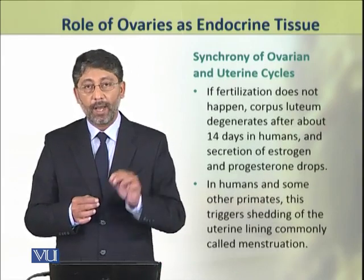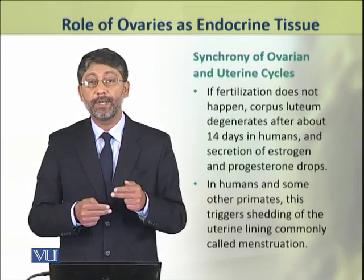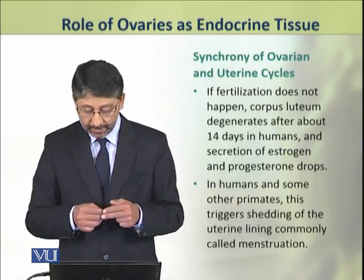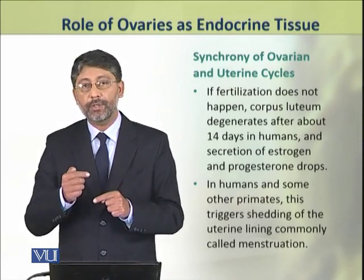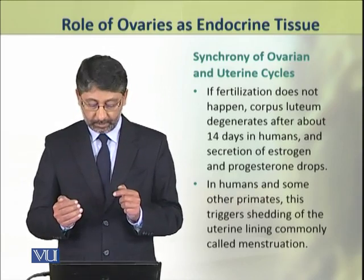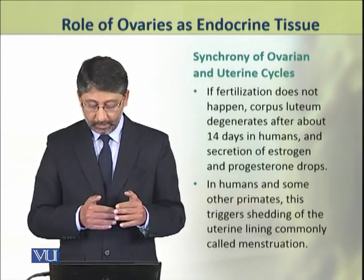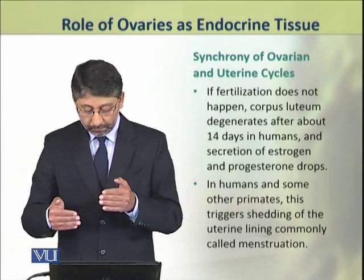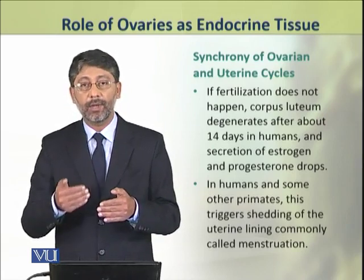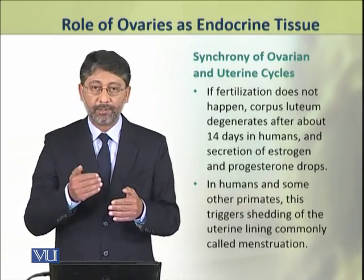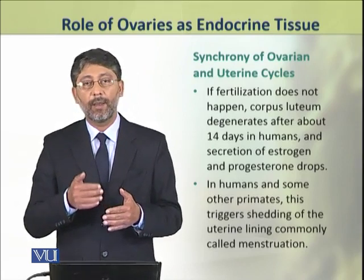However, if fertilization does not occur, the corpus luteum degenerates in about 14 days. As a result, the secretion of estrogen and progesterone drops. In humans and some other primates, when the corpus luteum degenerates, the uterine lining that had developed also breaks down and sheds — this phenomenon is called menstruation.